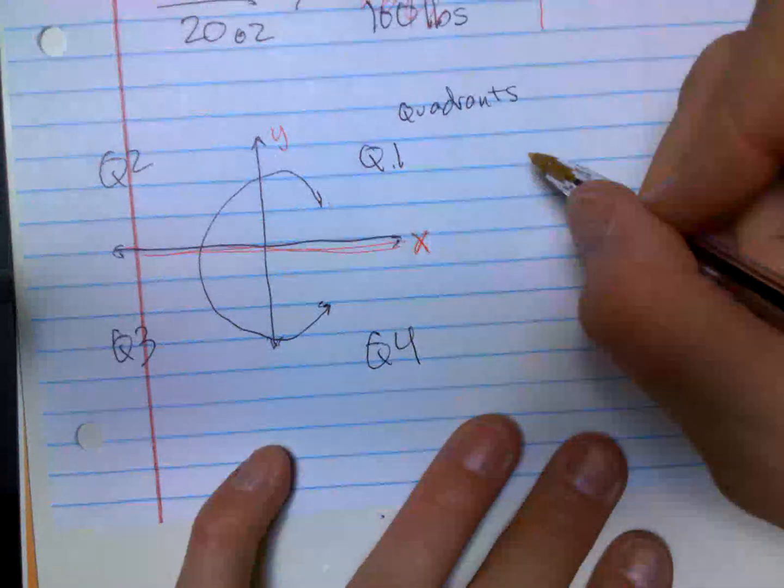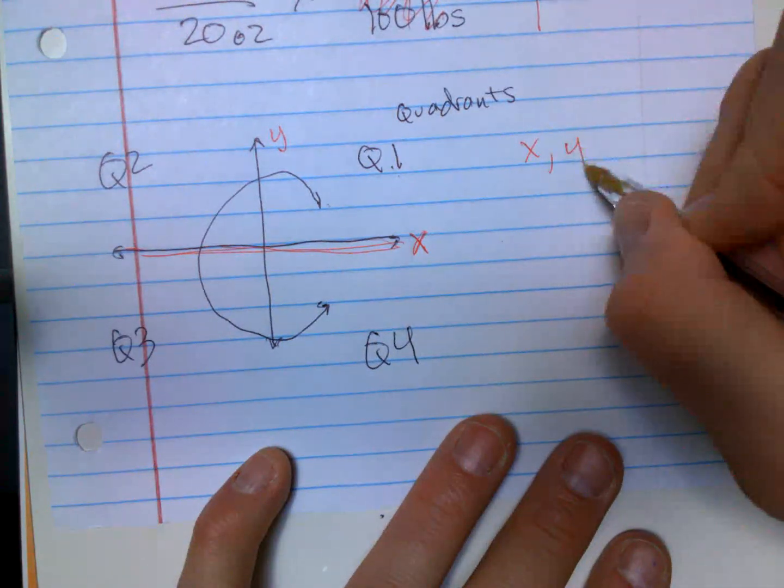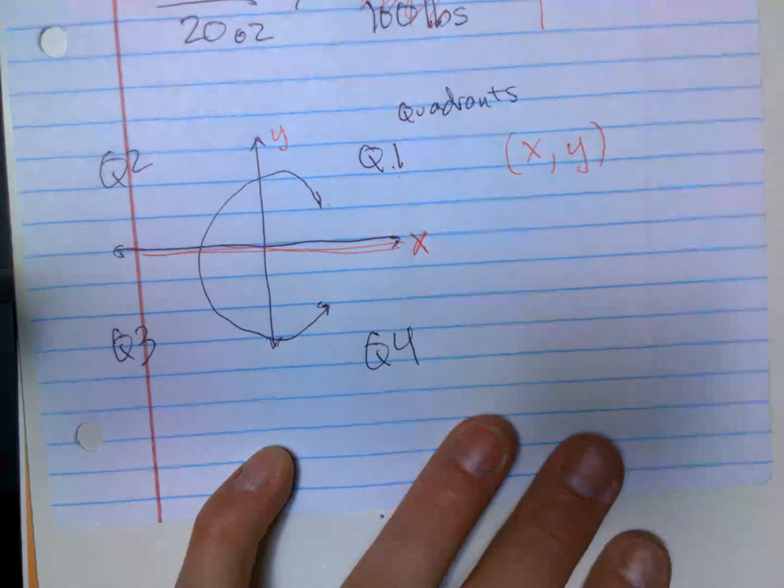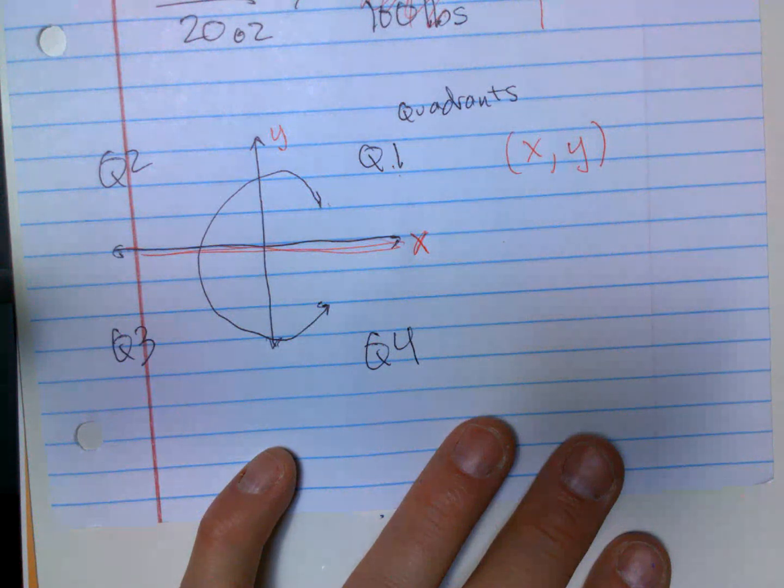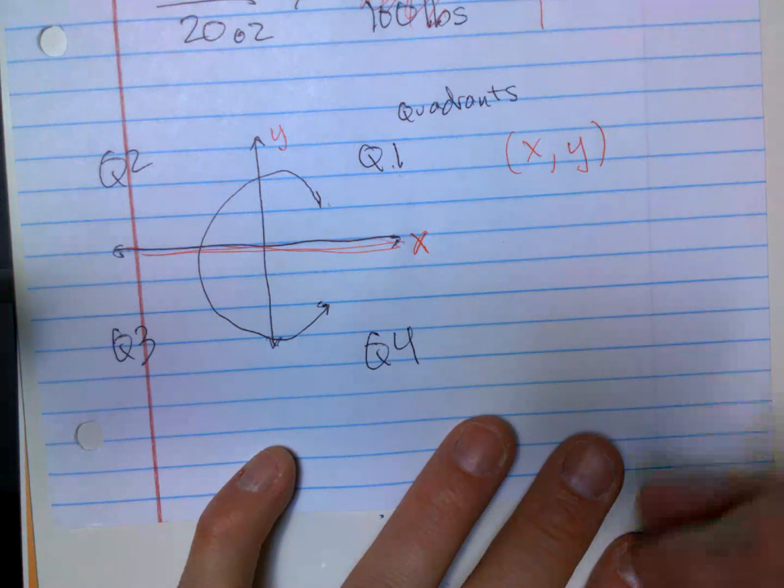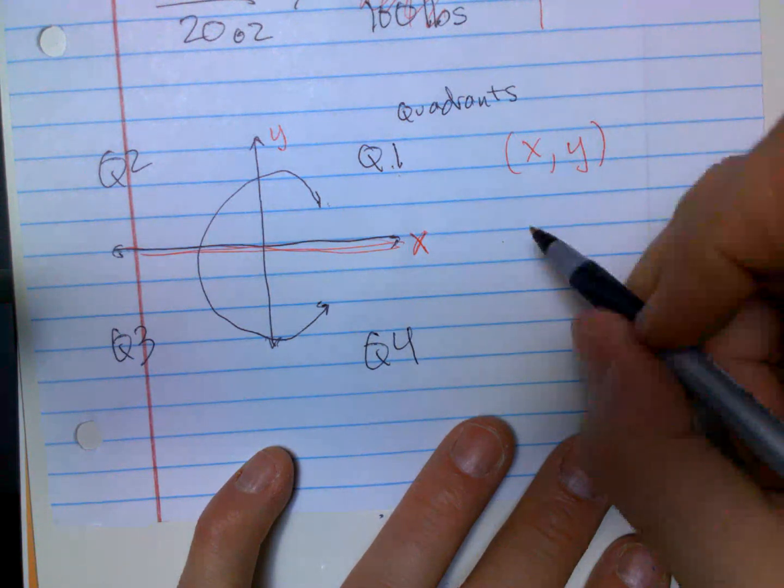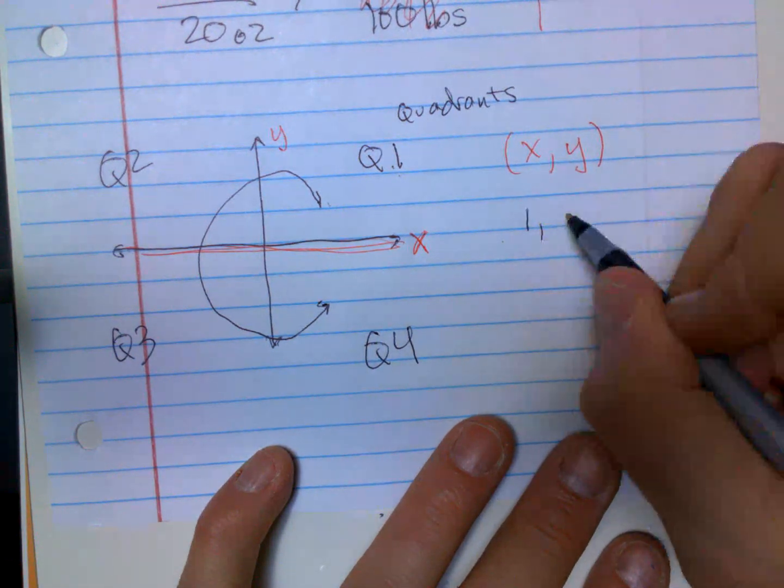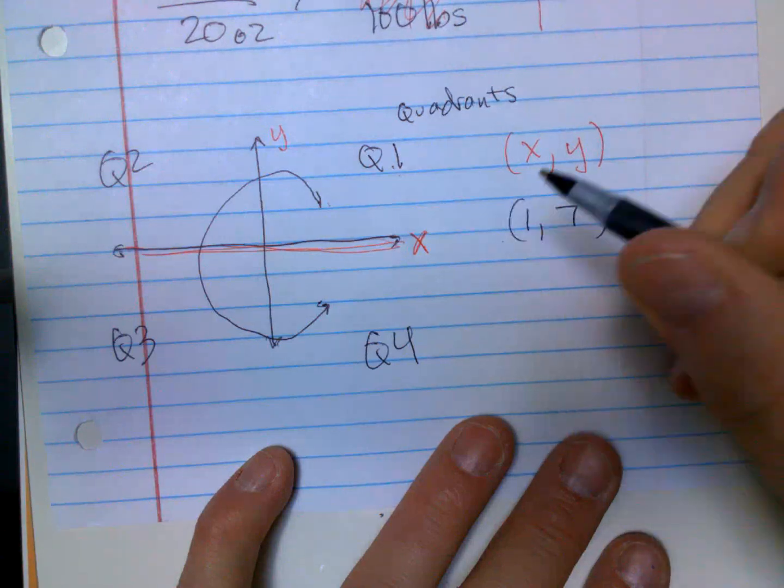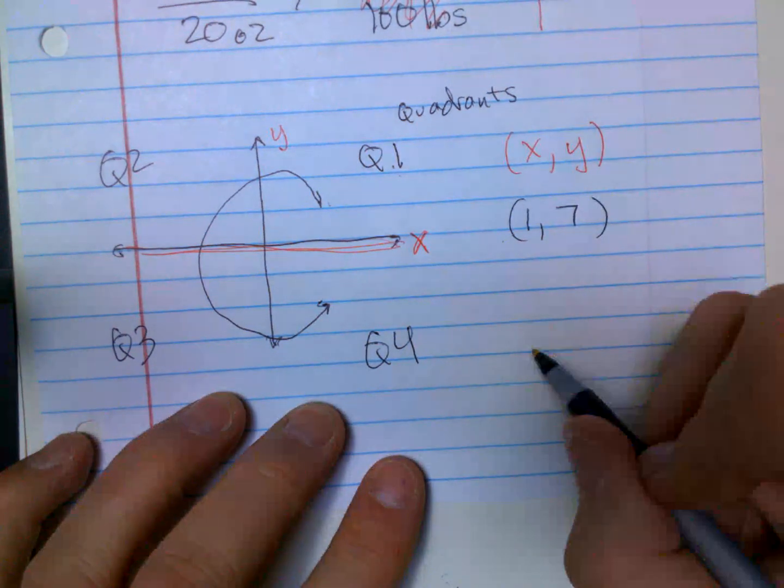When they give you points, or ordered pairs, or coordinates - that could be called all three of those: coordinates, ordered pair, or points - they always give you the X first and the Y. So if I said 1 comma 7, you start at the origin.